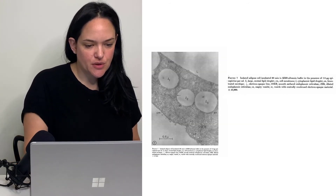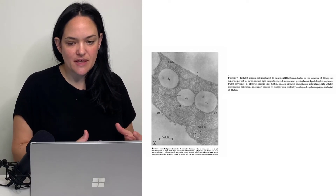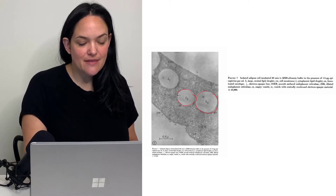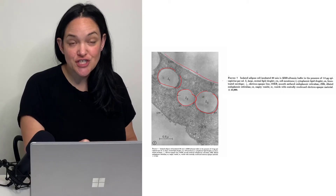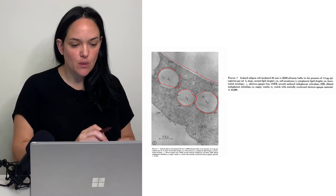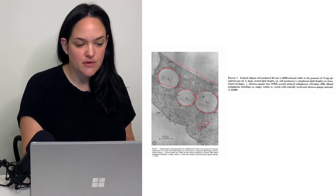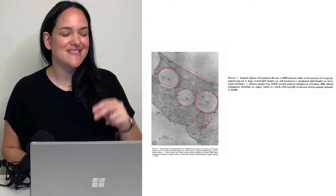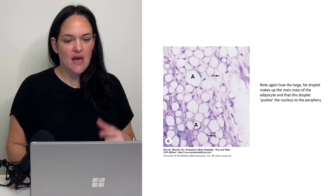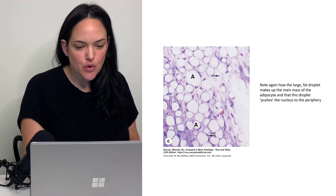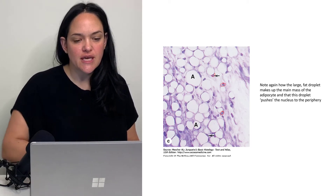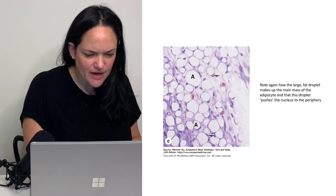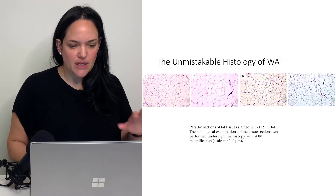A more zoomed-in view shows the cell membrane and small lipid droplets within it. There is a large central lipid droplet, and around the nucleus there may be smaller ones along with endoplasmic reticulum and other vacuoles. The peripheral, flattened nuclei are somewhat visible here, with a more clearly flattened nucleus visible on another slide.